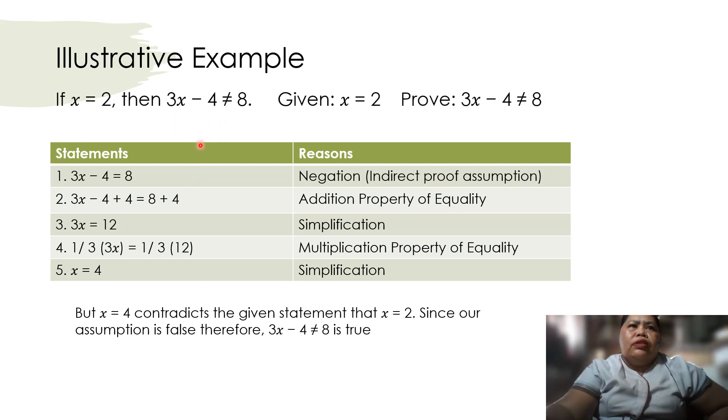Here, an illustrative example for indirect proof. If x is equal to 2, then 3x minus 4 is not equal to 8. Given x equals 2, prove that 3x minus 4 is not equal to 8. So, 3x minus 4 equals 8, that is true negation, that is the indirect proof assumption.